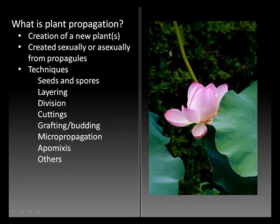What is plant propagation? Plant propagation is the creation of new plants — one or more new plants. Propagators use a variety of techniques, and these plants can be created sexually through seeds or asexually through a variety of different propagules.